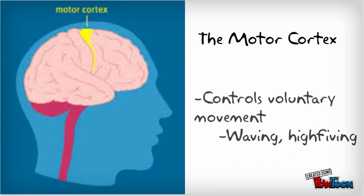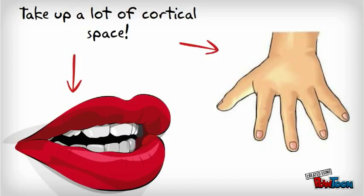The motor cortex is an area at the rear of the frontal lobes that controls voluntary movement, such as waving or high-fiving someone. Body areas that require precise control, such as the mouth and fingers, occupy the greatest amount of cortical space.